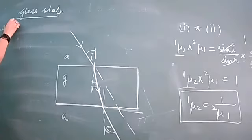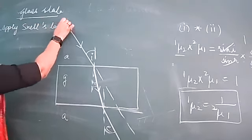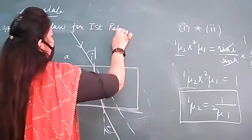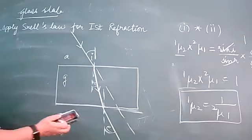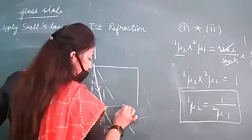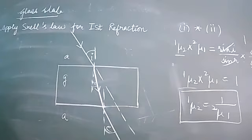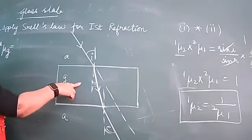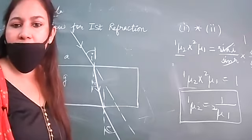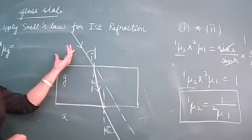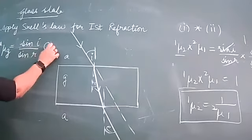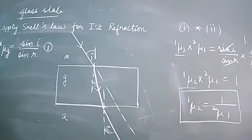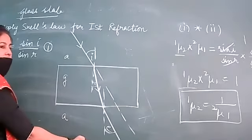Apply Snell's law for the first refraction at the air-to-glass interface. The refractive index of glass with respect to air equals sine i upon sine r. This is equation number one.